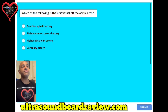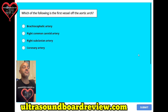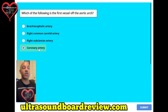Question eighteen. Which of the following is the first vessel off the aortic arch? A. Brachiocephalic artery. B. Right common carotid artery. C. Right subclavian artery. Or D. Coronary artery. The answer is D, coronary artery.